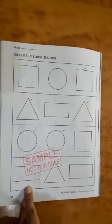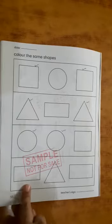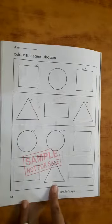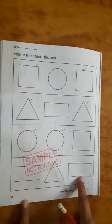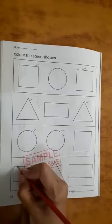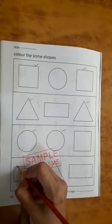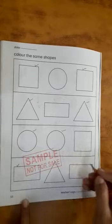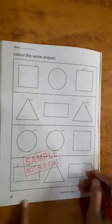Now this one. Rectangle. Triangle. Again we have a rectangle. So you have to colour in rectangle and in this rectangle.